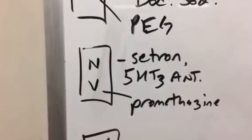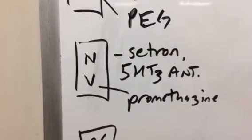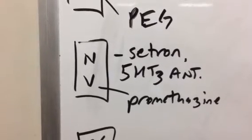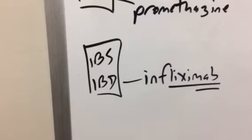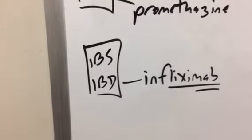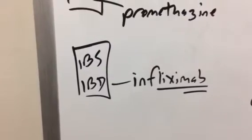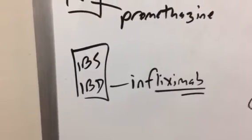Then we have nausea and vomiting, so ondansetron for nausea, which is a 5-HT3 antagonist. Then promethazine for vomiting. Then IBS versus IBD, irritable bowel disease, and infliximab for infliximab or Remicade, which is a remission aid.